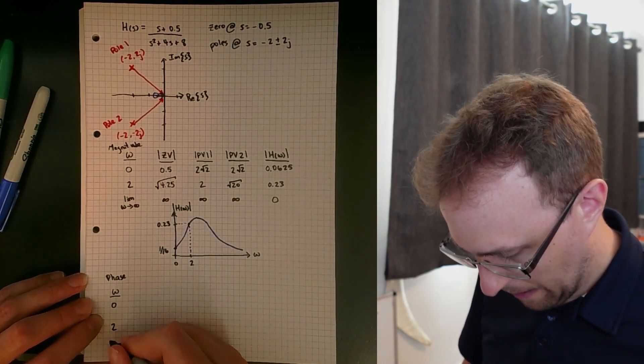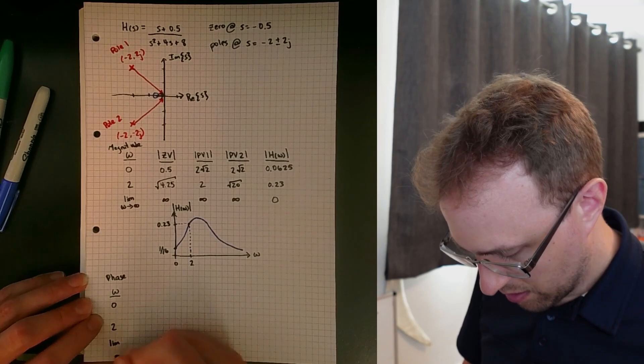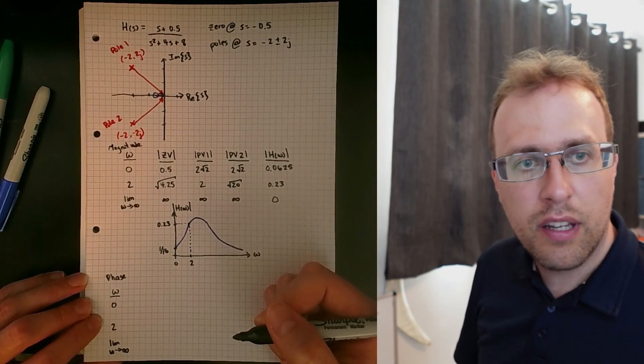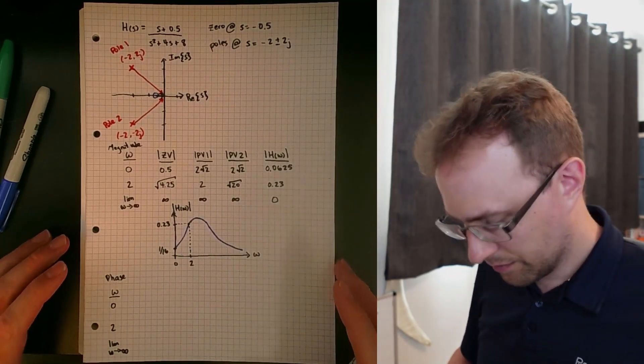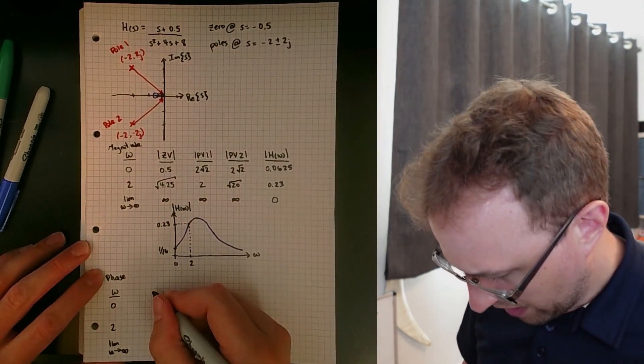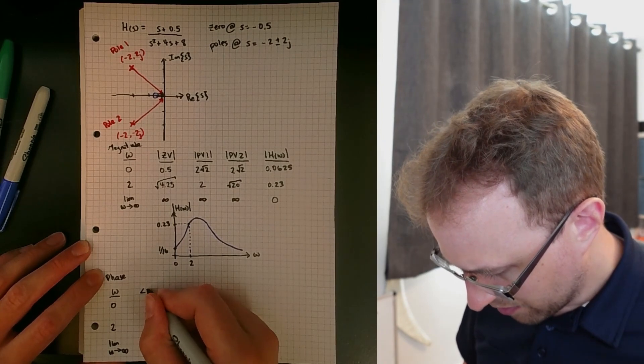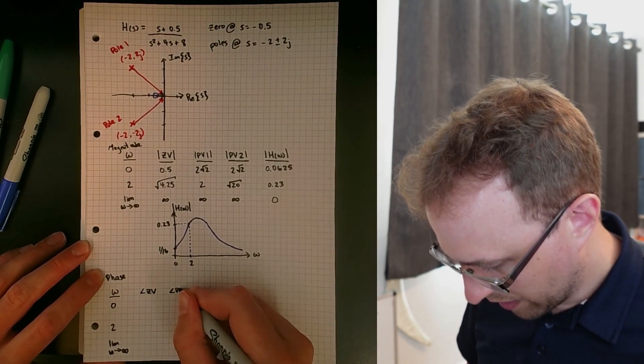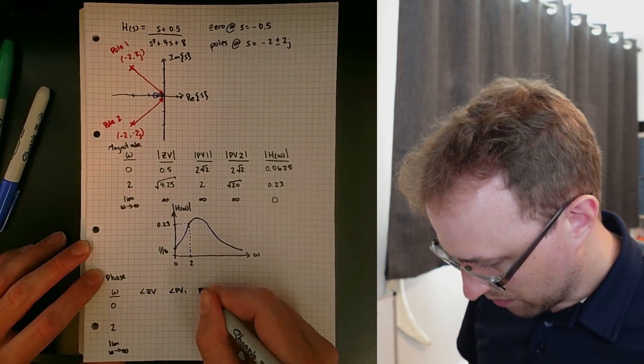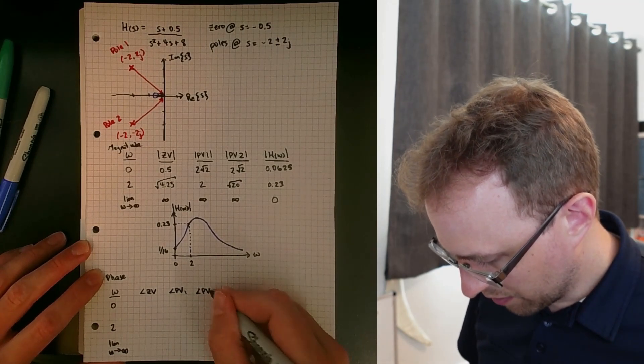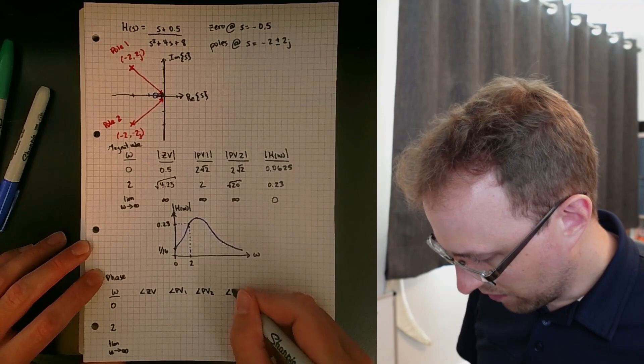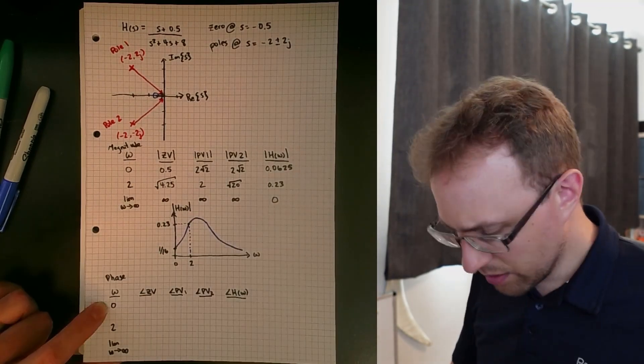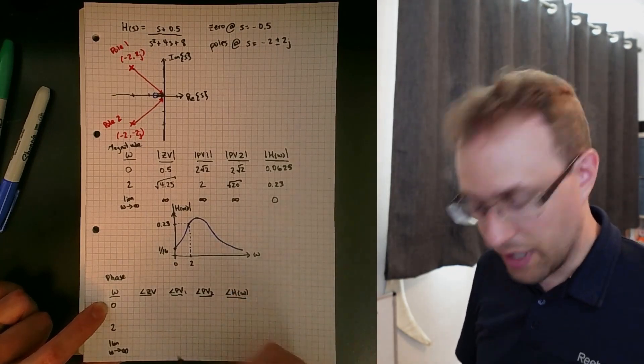For the second part we're doing the phase. I'm going to use the same test frequencies of zero, two, and then the limit as omega tends to infinity. We have the phase of our zero vector, the phase of pole vector one, the phase of pole vector two, and then the overall phase of h of omega. So let's go one frequency at a time.